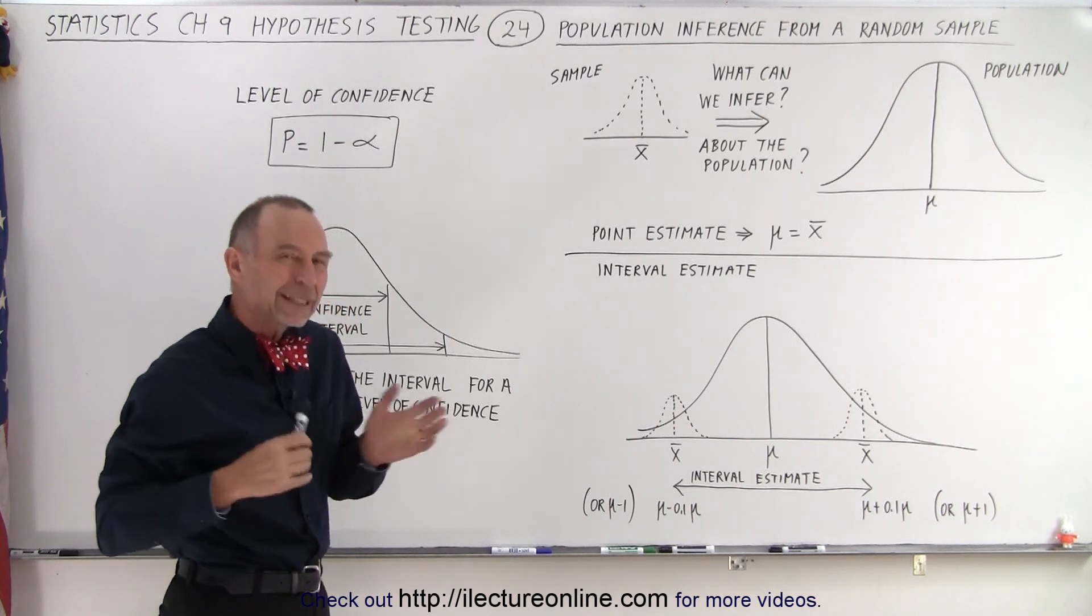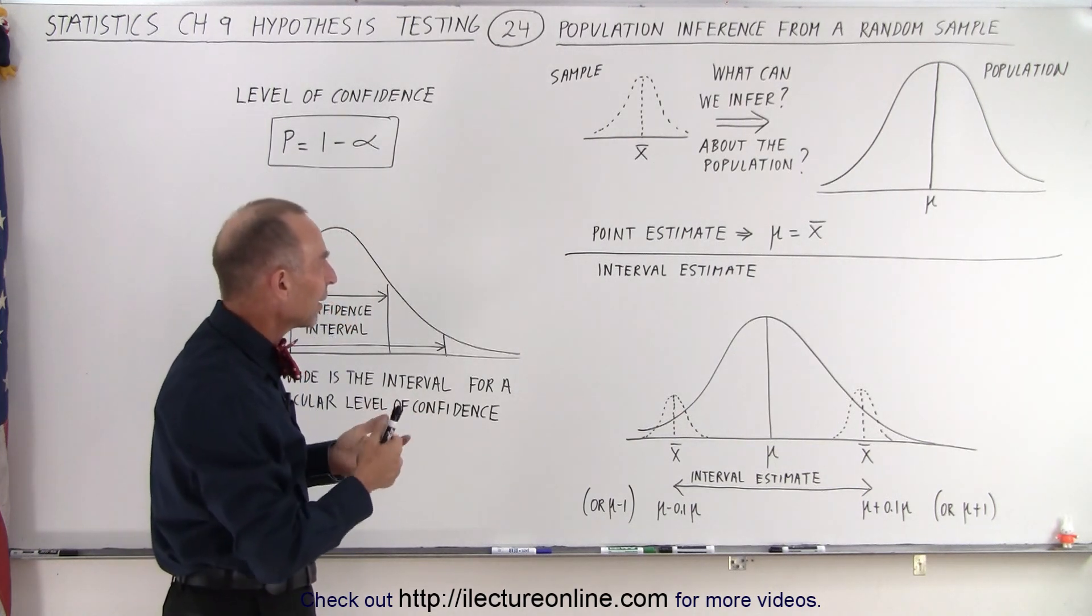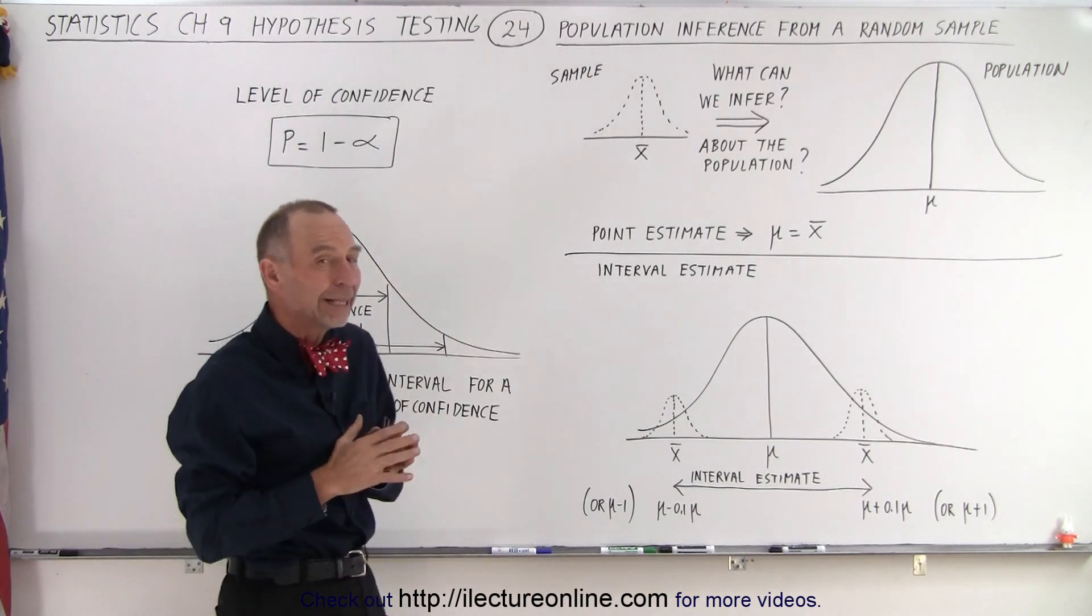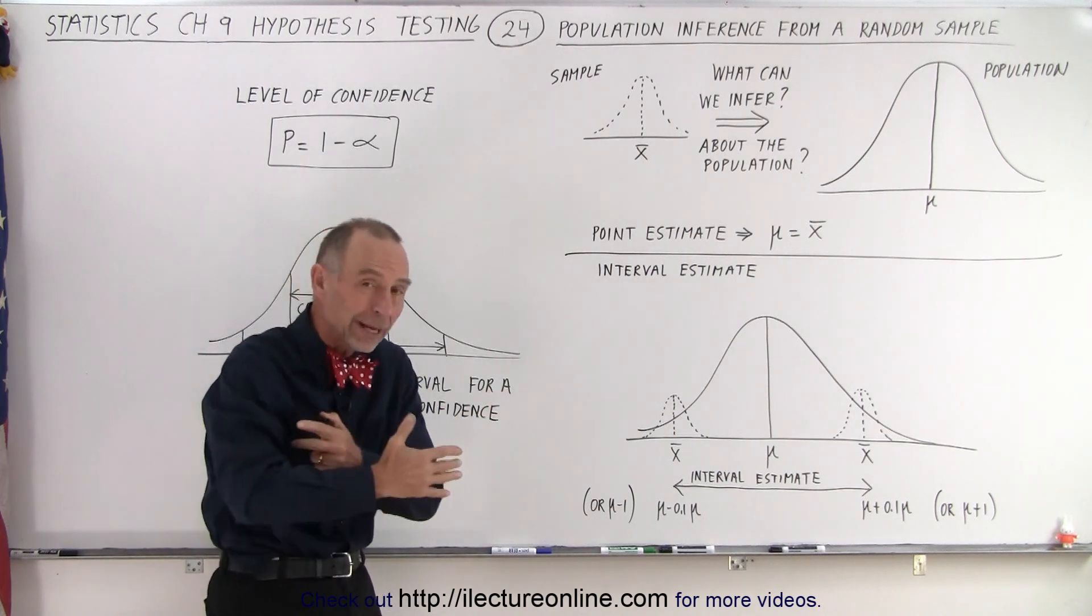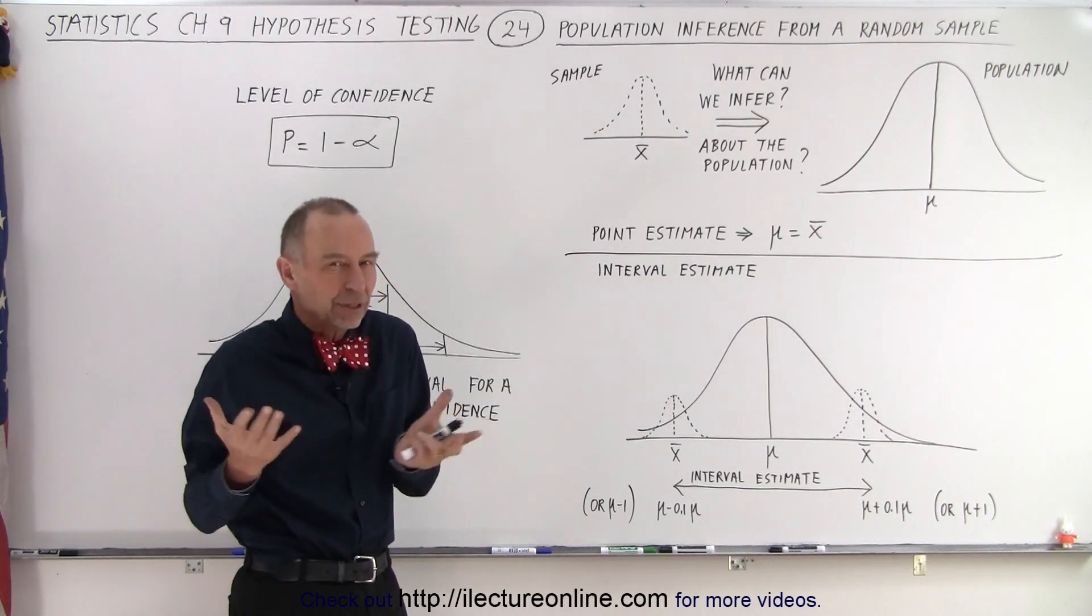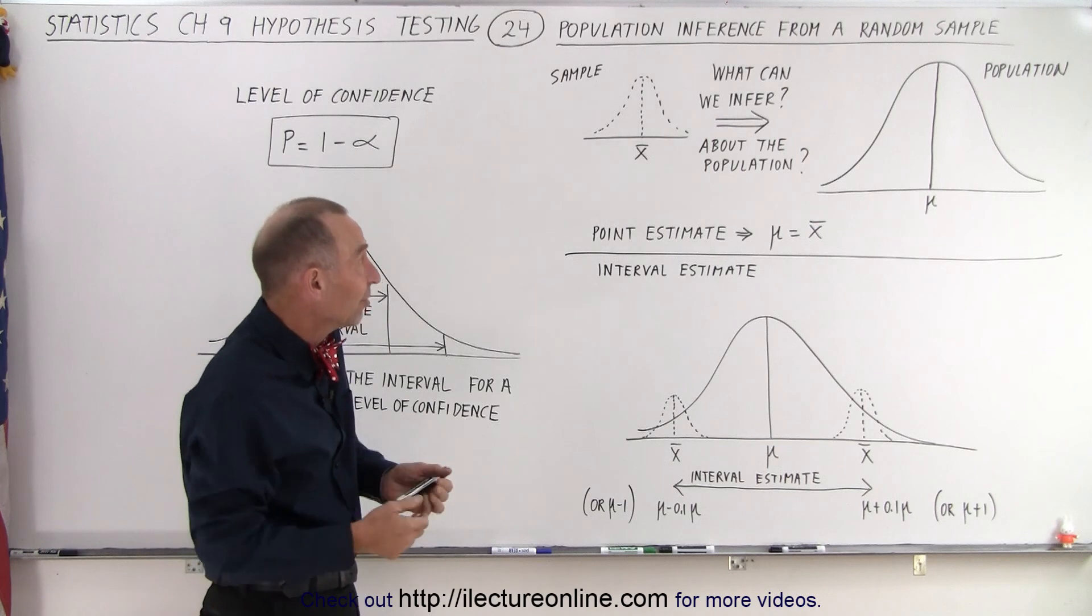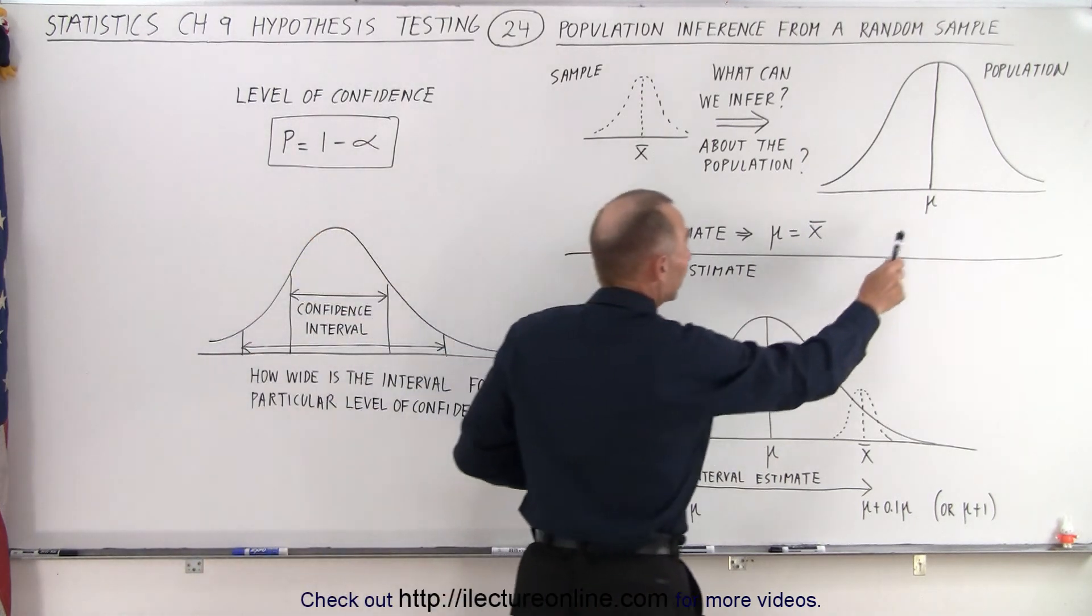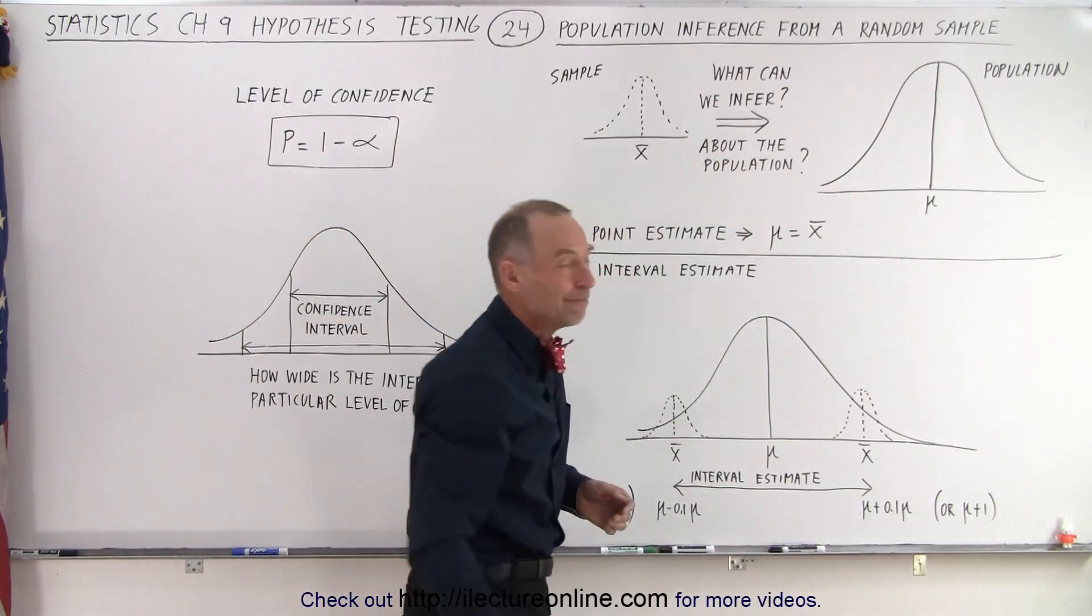So let's see what kind of things we could think about. Well, first of all we can do what we call a point estimate. Since we don't know anything else, we have no idea what the population mean is, we can simply say we're going to let the population mean equal the sample mean.